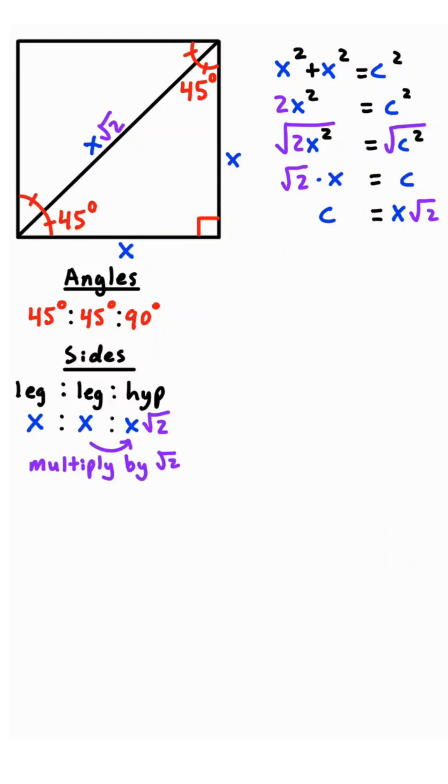Meaning if you're given the leg, you can multiply by square root of 2 to get the hypotenuse. So how do we use this? If one leg is 3, the other leg must be 3, and the hypotenuse is 3 root 2.